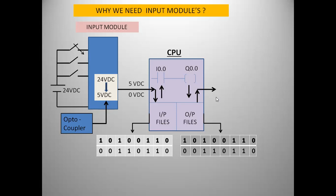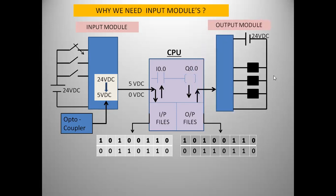From the output file, the signal goes to the output module which updates the outputs — which outputs will be on or off. The need for separate input and output modules is for conversion of the supply voltage, because the CPU requires only 5 volt DC. This conversion is done using optocouplers already available inside the module. For example, if 230V AC is connected to the module instead of control DC, it will damage only that particular optocoupler.